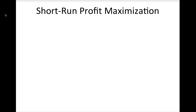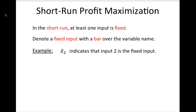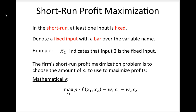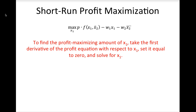We will start by examining the firm's short-run profit maximization problem. Recall that in the short run, at least one input is fixed. We will denote the fixed input by placing a bar over it in the profit equation. For example, X2 with a bar over it indicates that input 2 is the fixed input. Thus, the firm's short-run maximization problem is to choose the amount of X1 to use to maximize profits. To find the amount of X1 that maximizes profits, we take the first derivative of the profit equation with respect to X1, set it equal to zero, and solve for X1.